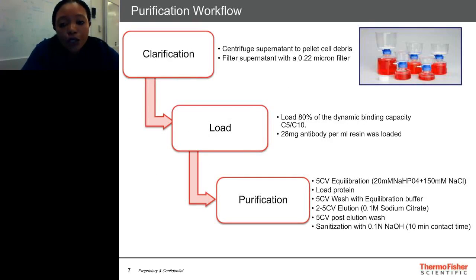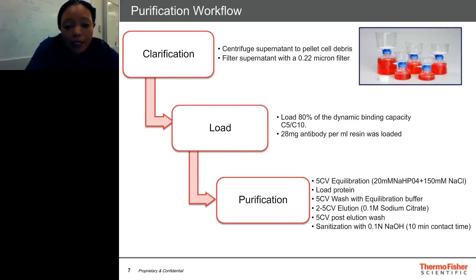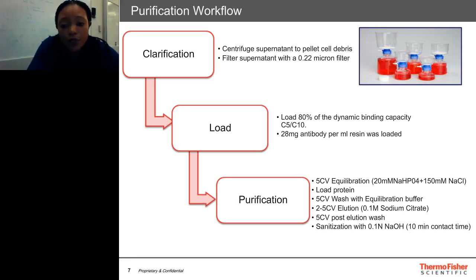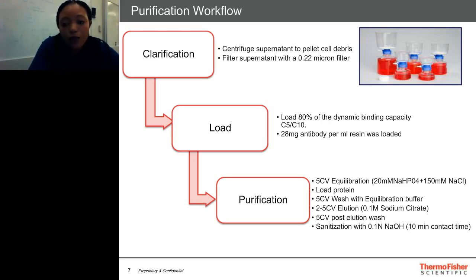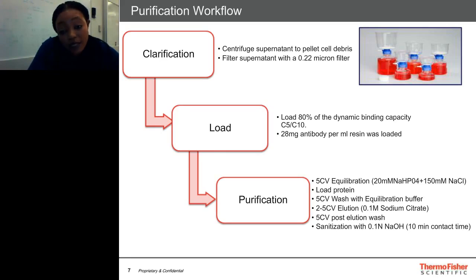Here we have a schematic of a general overview for the purification workflow. At the top left-hand corner you find the clarification procedure. To clarify the supernatant, we centrifuged it to pellet the cell debris, then filtered the supernatant with a 0.22 micron filter — basic research vacuum bottle top filters that are pretty much the worst case scenario used in R&D. There are better filters meant to filter crude supernatant. After clarification, we determined the load conditions, loading 80% of the dynamic binding capacity C5, which equated to 28 mg of antibody per ml resin for this particular column.